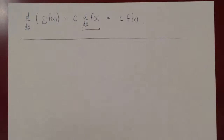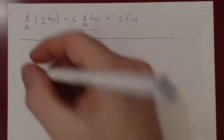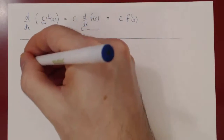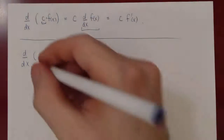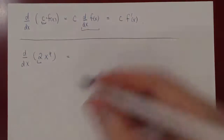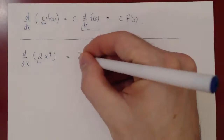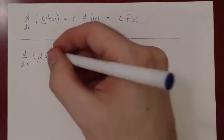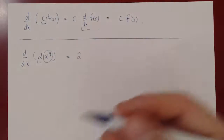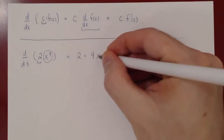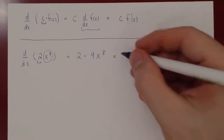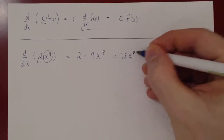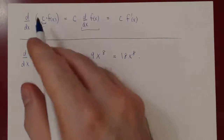Let's look at some examples using the power rule and the sum and difference rule. What is the derivative of 2x to the 9? The constant multiple is 2, so it just stays there: 2 times the derivative of x to the 9. With the power rule, that gives 2 times 9x to the 8, which simplifies to 18x to the 8. That is the constant multiple rule.